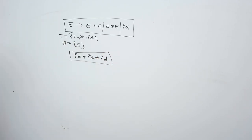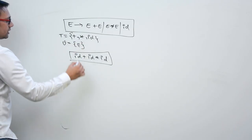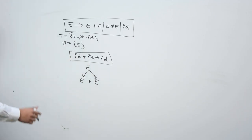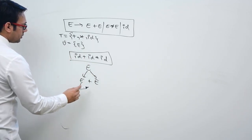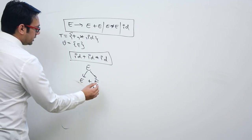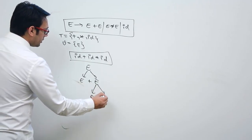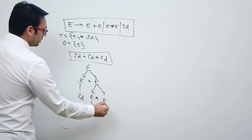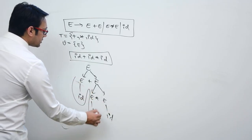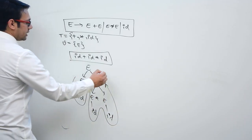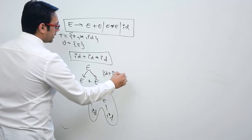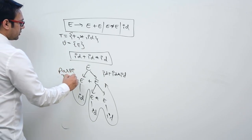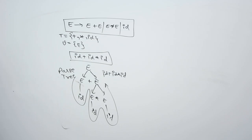For the string ID plus ID multiplied by ID, is there two different parse trees possible? From E, we can generate E plus E. This E can be replaced by E star E. Then each E can be replaced by ID, ID, and ID respectively. So this complete grammar is generating ID plus ID multiplied by ID. If you check this parse tree, it is generating this string.